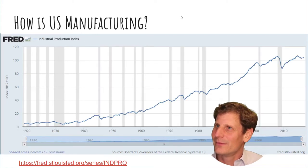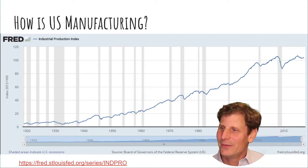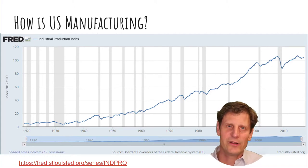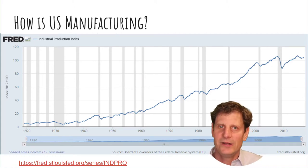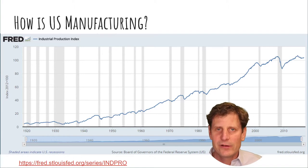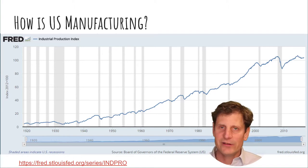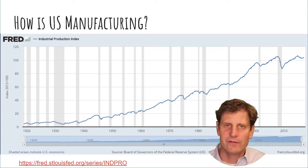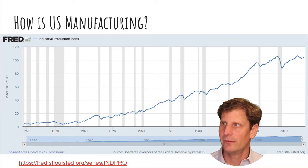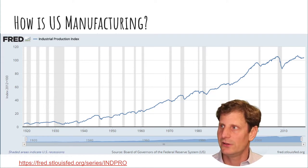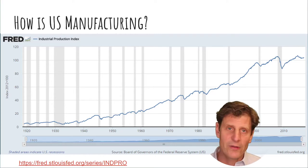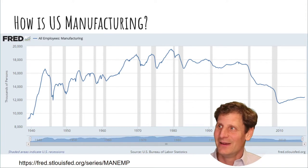We can do the same with an index of industrial production going all the way back to the 1920s. Again, it tells a really positive story — a big recession hurt manufacturing in 2008–2009, but then we're back to where we were before, and even a little higher. Fantastic, good news. But wait — let's look at employment in manufacturing.